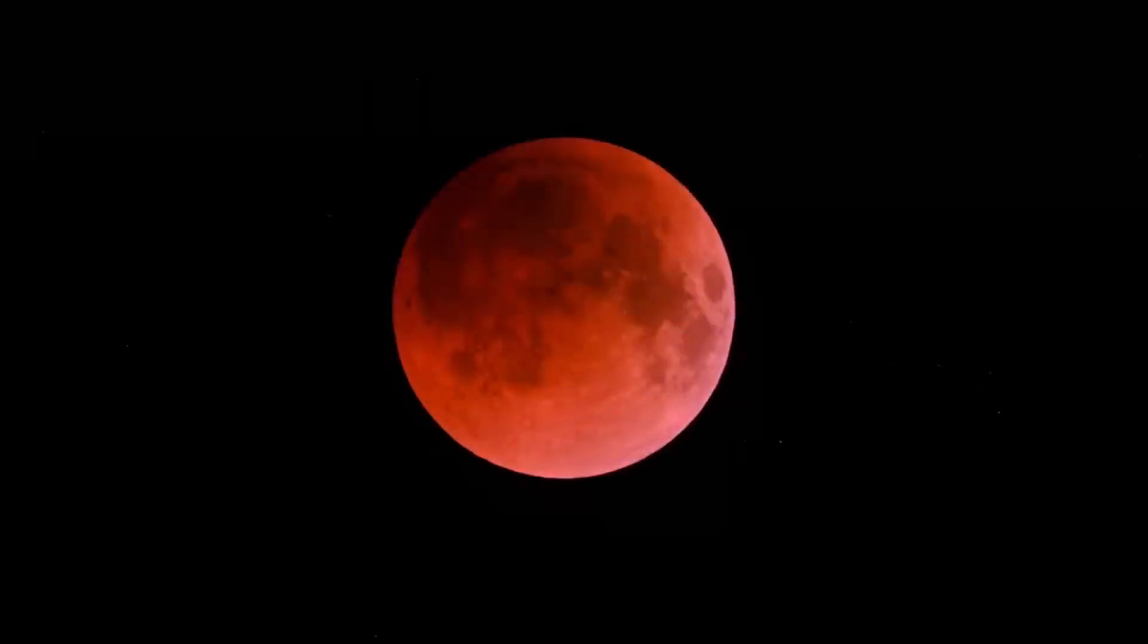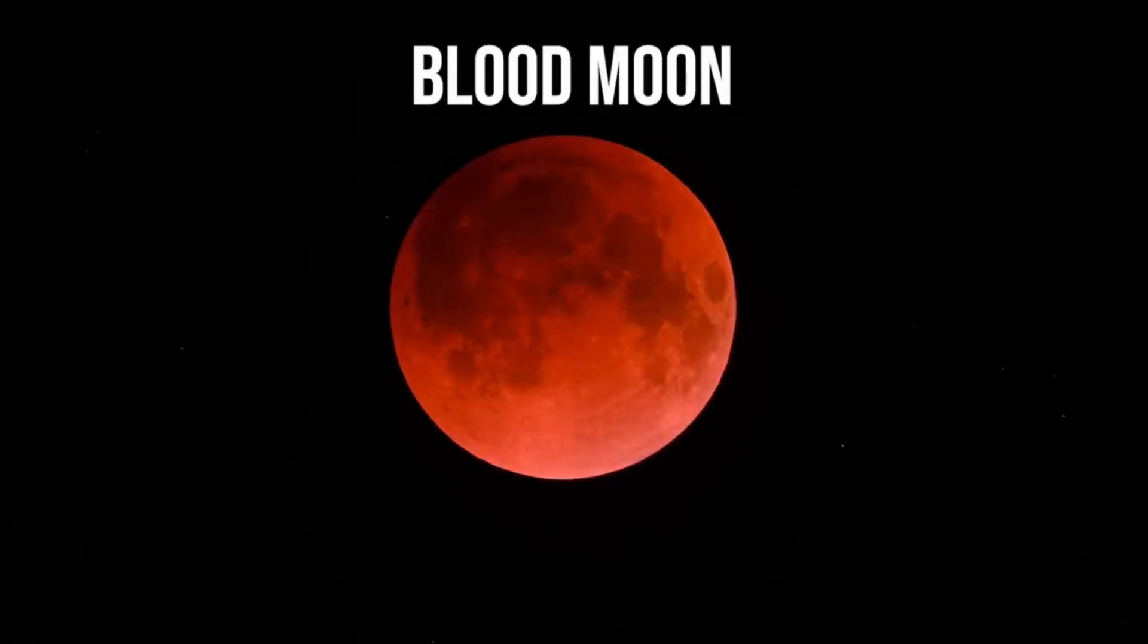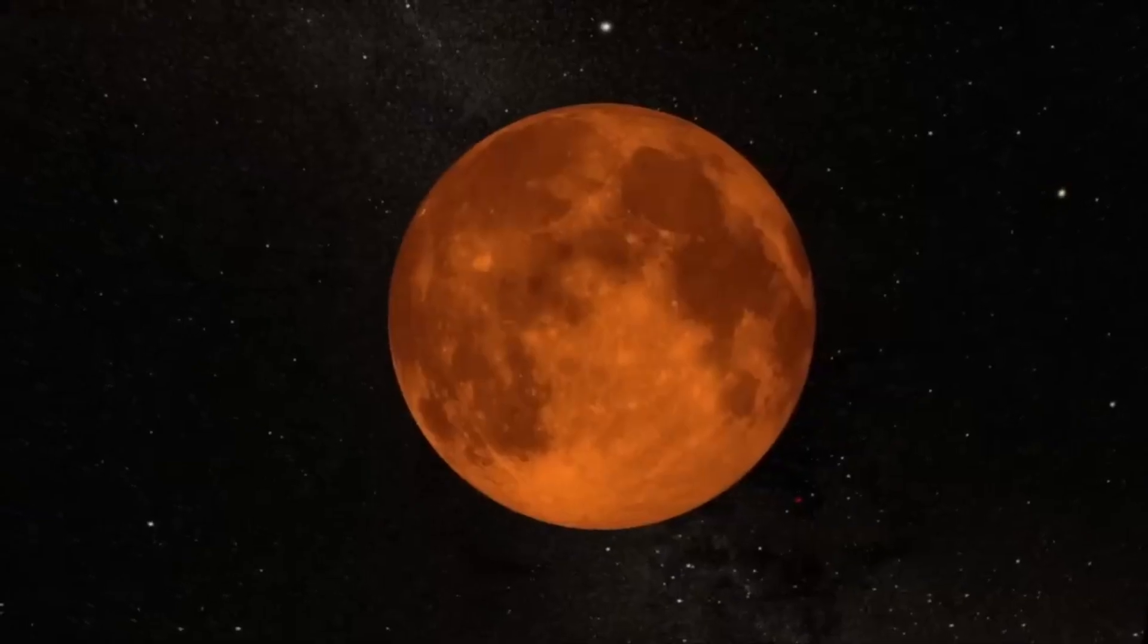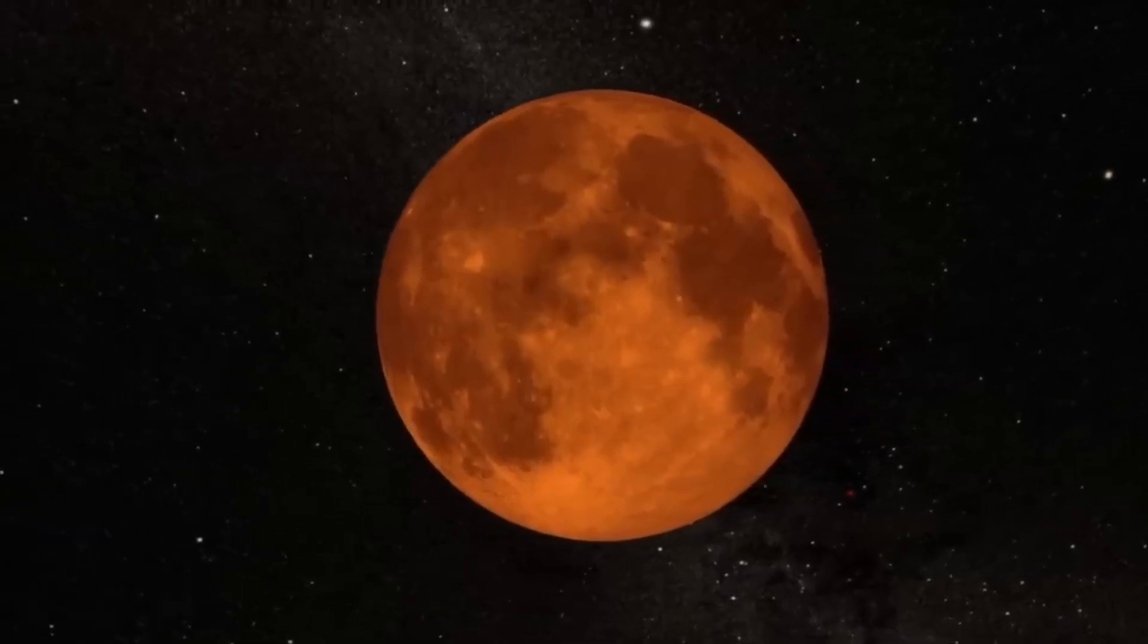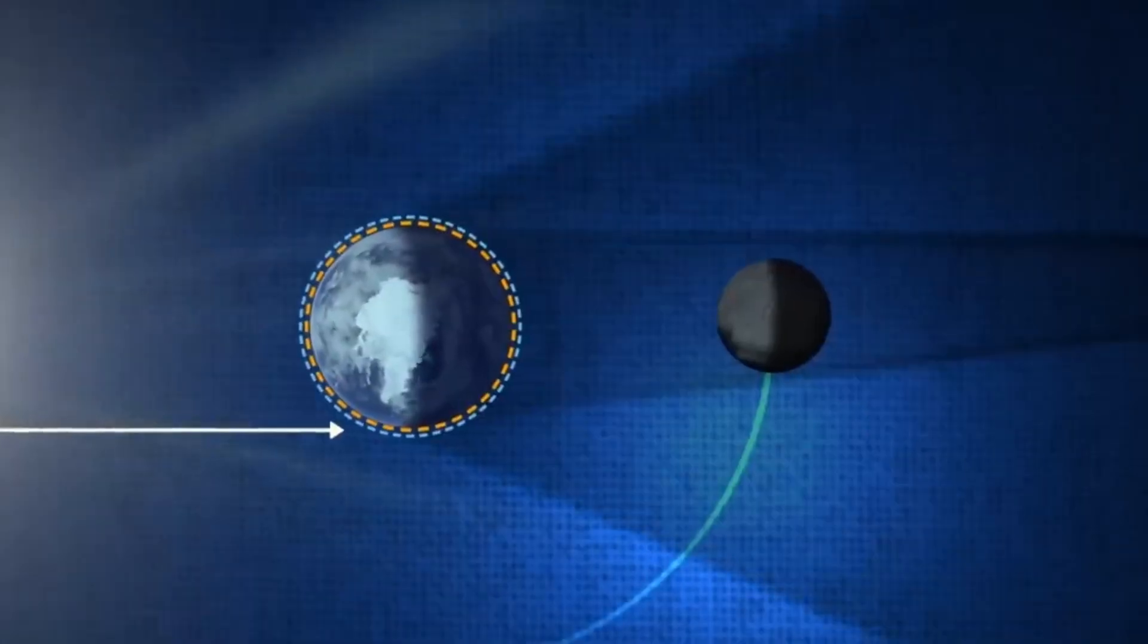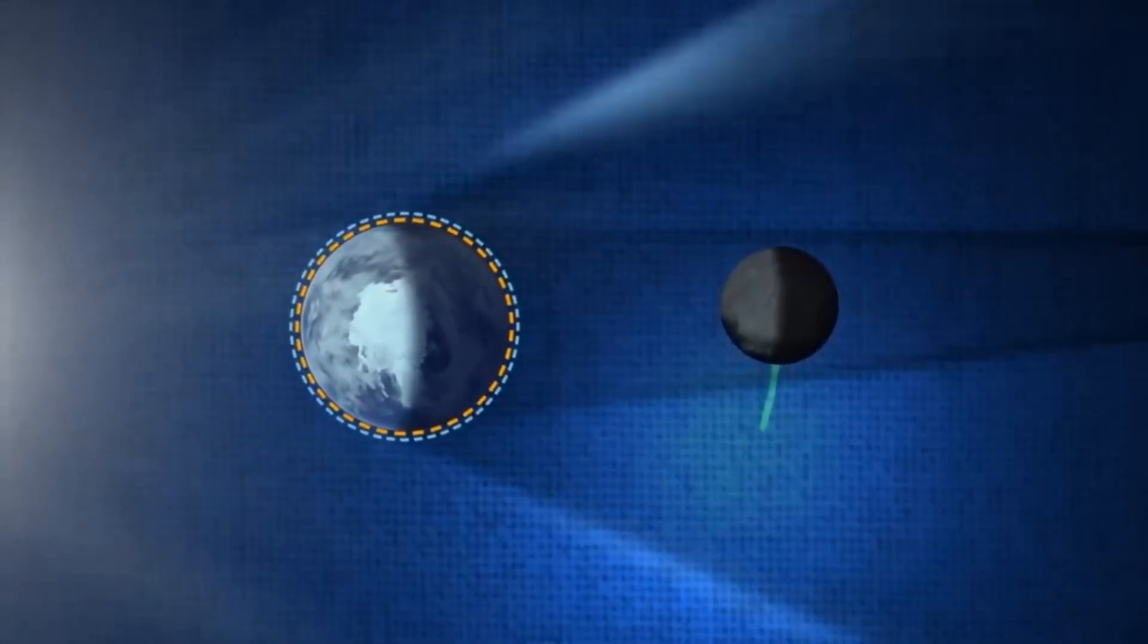But here's the amazing coincidence: the sun is also about 400 times farther away from earth than the moon is. This ratio makes the sun and the moon appear almost the same size in our sky. Without this mathematical coincidence, eclipses would look completely different or might not even occur in the same way at all.